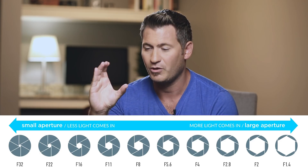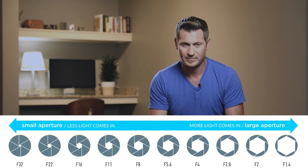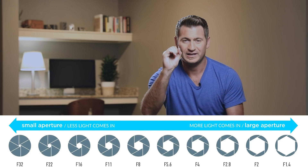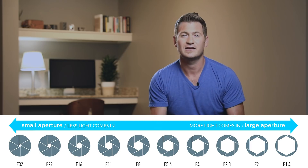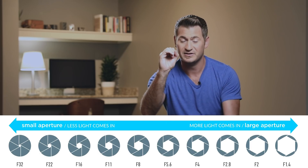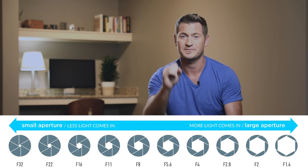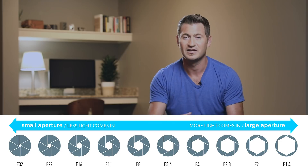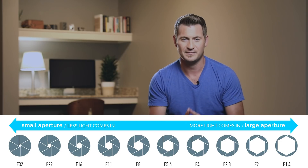The larger the size hole, more light comes through. The smaller the hole, less light comes through. So the smaller aperture, less light comes through; the larger aperture, more light comes through. It's very, very obvious and easy to understand.